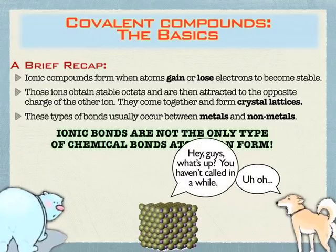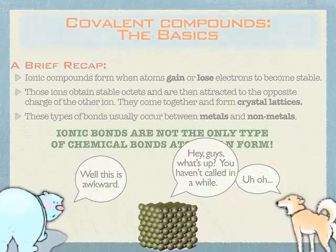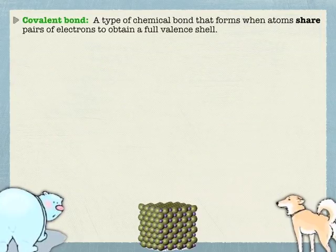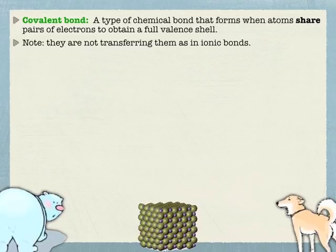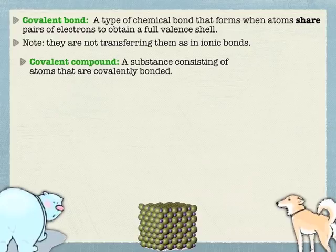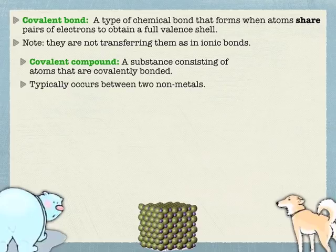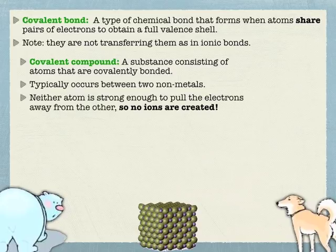The other type is the covalent bond, which we're going to talk about today. A covalent bond is caused when atoms share electrons to get full valence shells, as opposed to transferring them. Carbon and oxygen, for example, share electrons. The basic idea is that they share electrons to get to eight. Since we're sharing electrons, these bonds are typically between two non-metals — neither is strong enough to dominate, so they share electrons. If you're sharing electrons, you're not making ions, and if you're not making ions, you're not making crystal lattices.